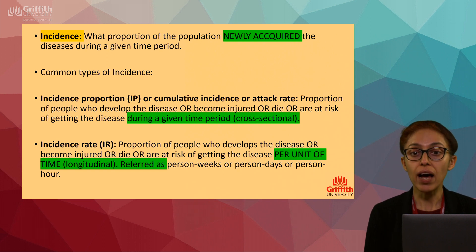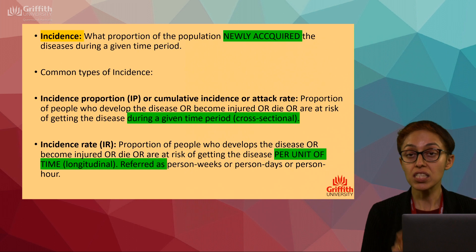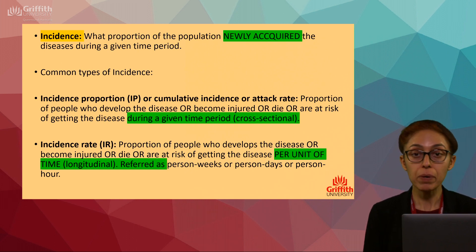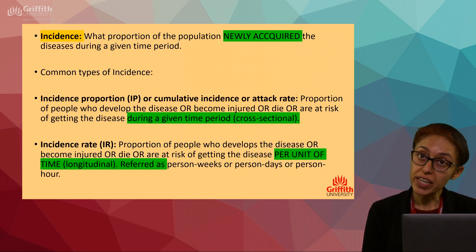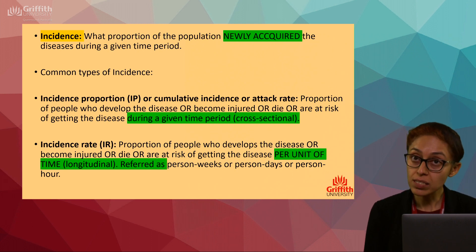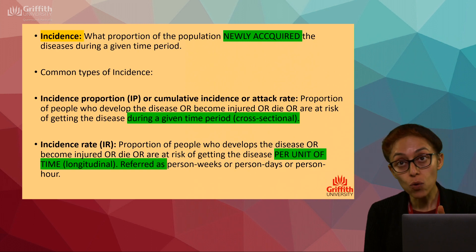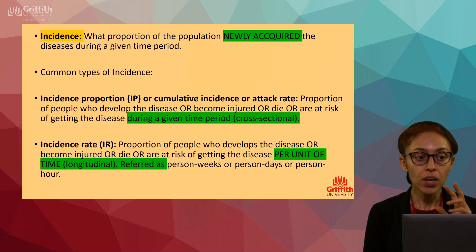In your survey, when someone reports being newly diagnosed — only this month or this year — that is your incidence. People who have had diabetes for the past 5 or 10 years — that is prevalence. People who have newly acquired the disease: that is incidence.